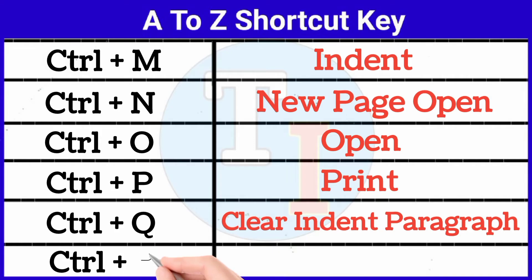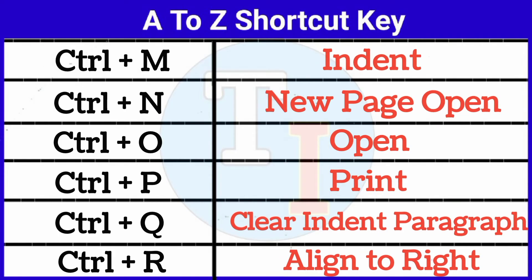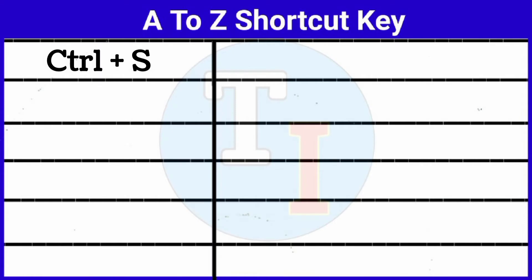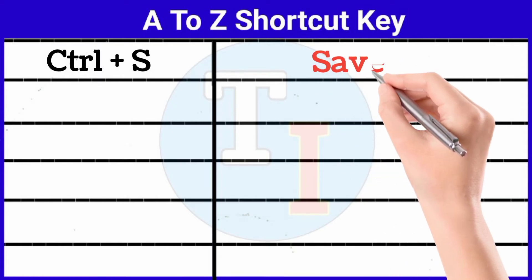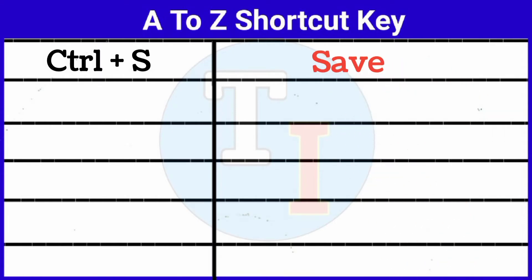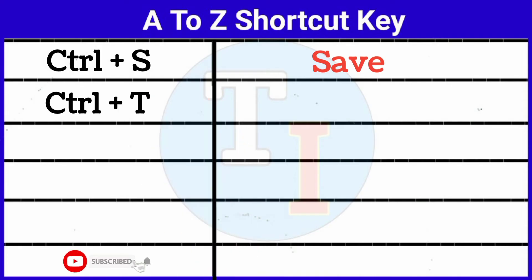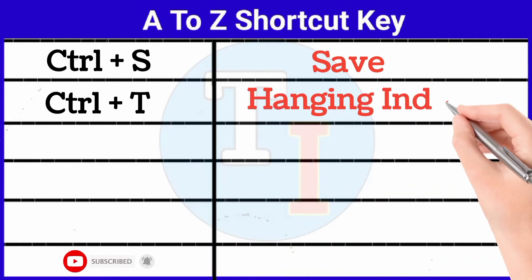Ctrl plus R: align to right. Ctrl plus S: save. Ctrl plus T: hanging indent.